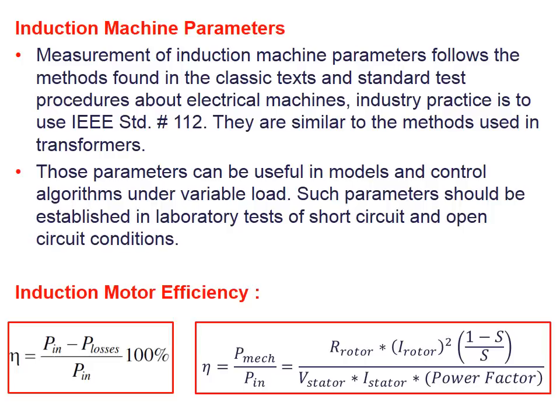When measuring induction machine parameters, we follow procedures described in books and defined by IEEE standards — particularly IEEE Standard 112. These methods are similar to transformer testing but require corrections depending on machine construction. These parameters are useful for calculating efficiency, losses, power factor, and for developing models and control algorithms. Parameters are established in the laboratory using short-circuit and open-circuit conditions.